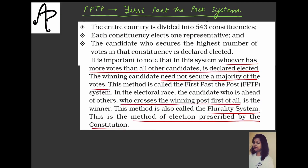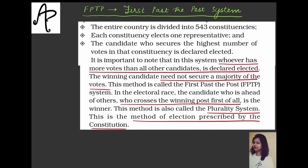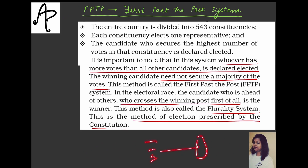Now let's understand the two systems: First Past the Post (FPTP) and proportional representation. In FPTP, the word itself gives you the idea — imagine a race where several people are running toward a post. There is no fixed time criterion. The only criterion is whoever reaches the post first. A similar logic applies in this election system.